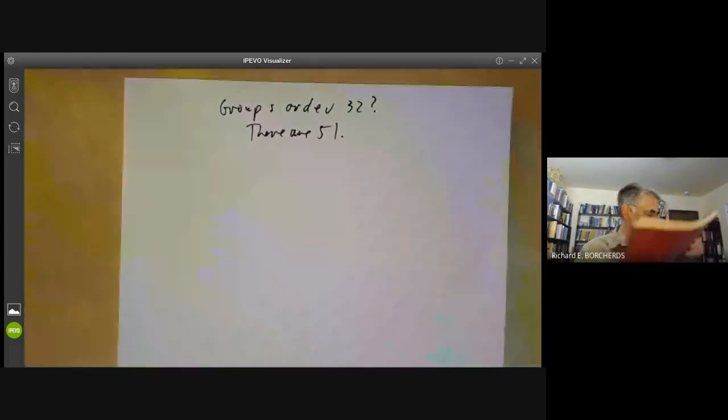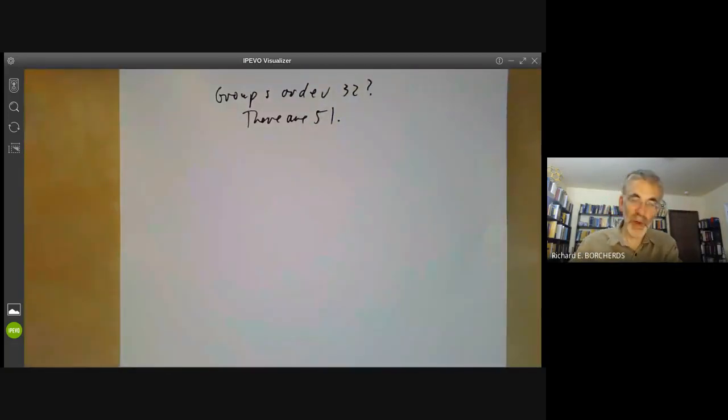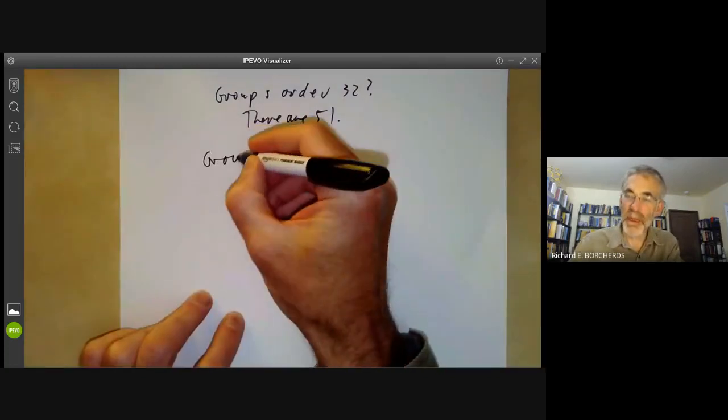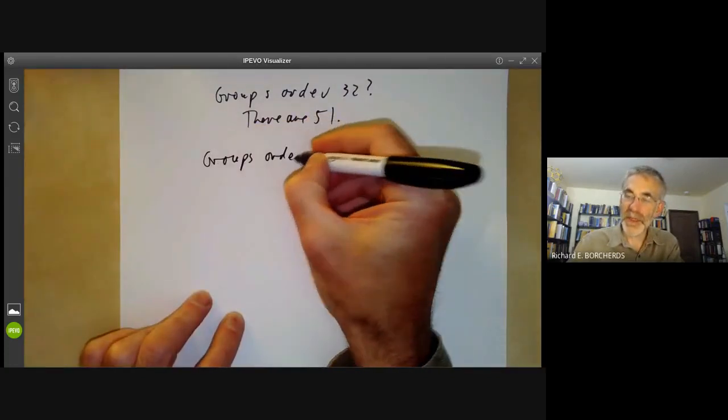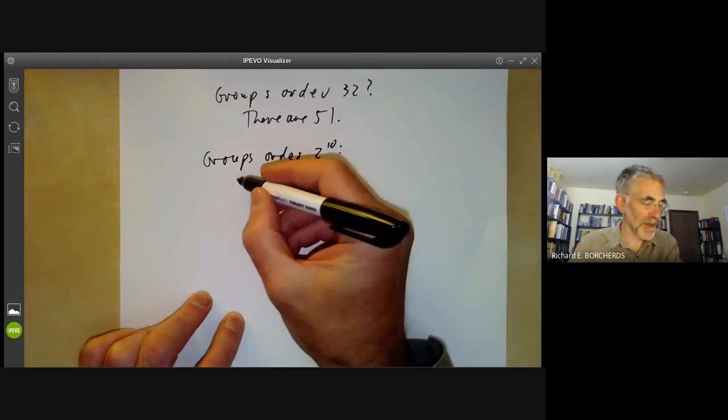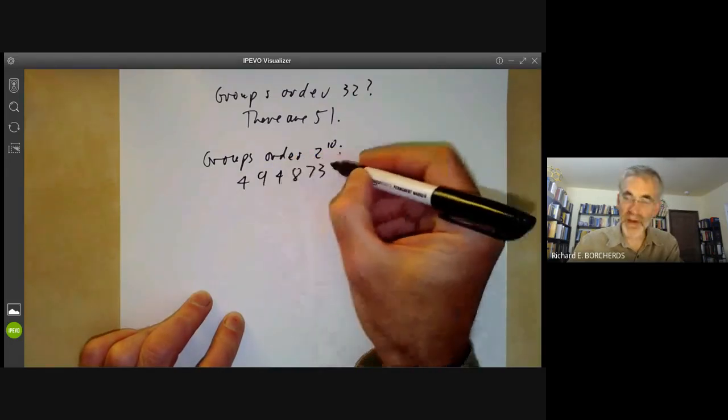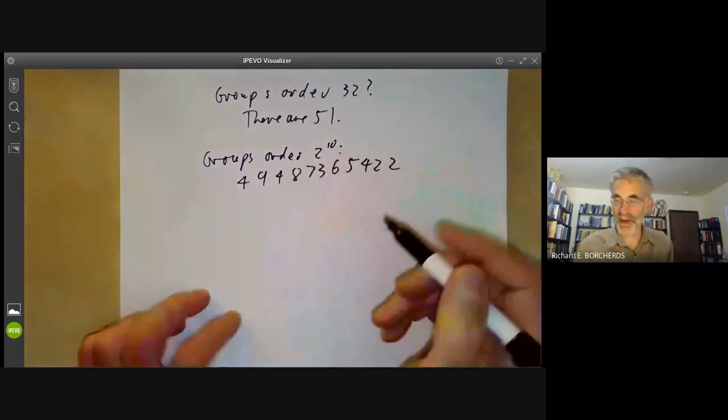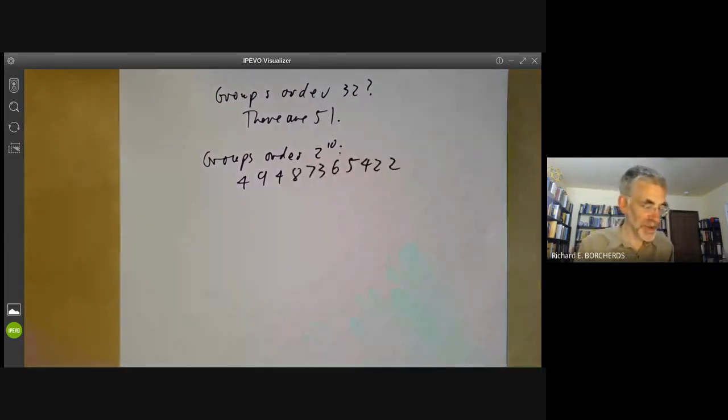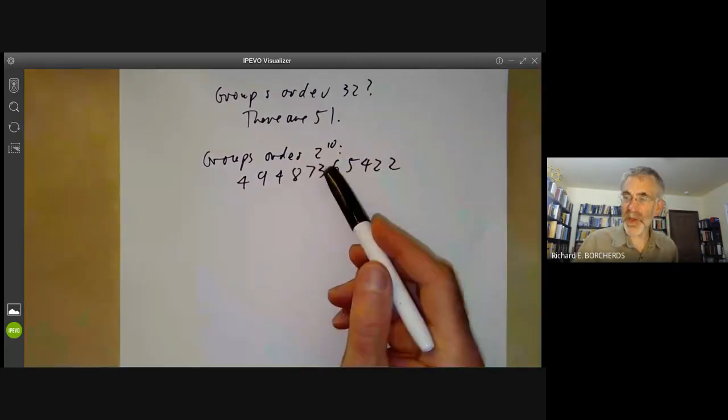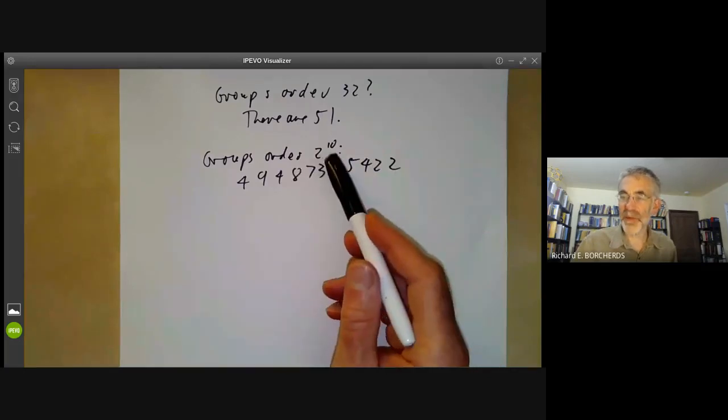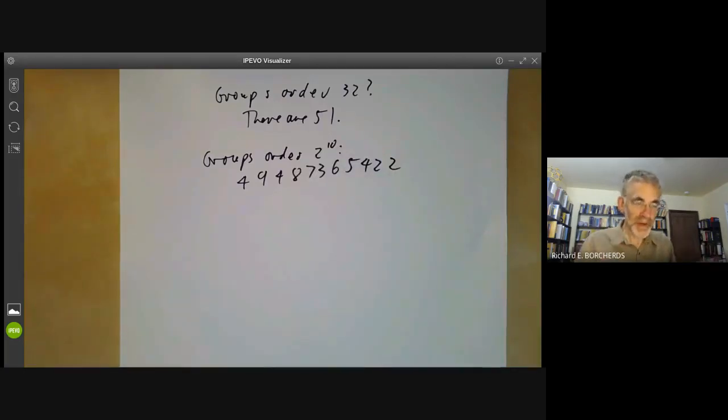You can probably see most of it there. As I said, this is one of 267 diagrams, although I must admit that's one of the most complicated ones. It gets even worse if you look at 2-groups of higher order. For instance, groups of order 2 to the 10, how many are there? Well, the answer turns out to be 49,487,365,422. I guess these were classified by computer rather than by hand.